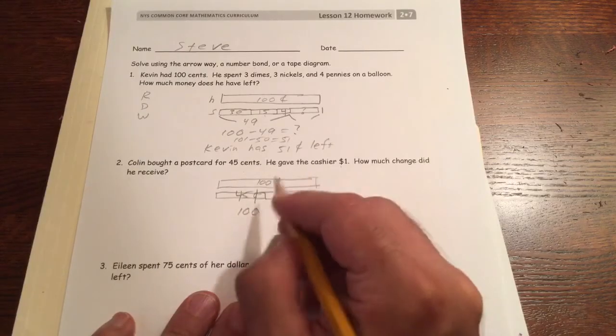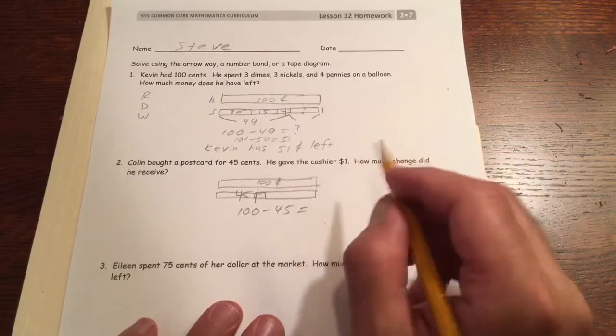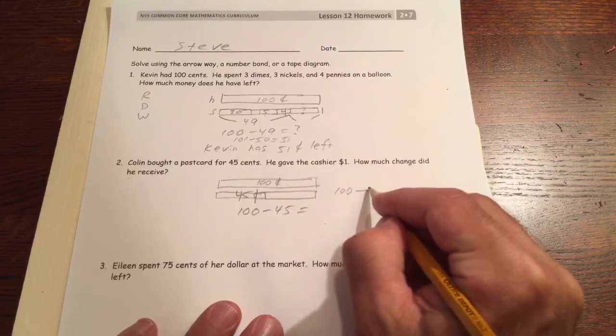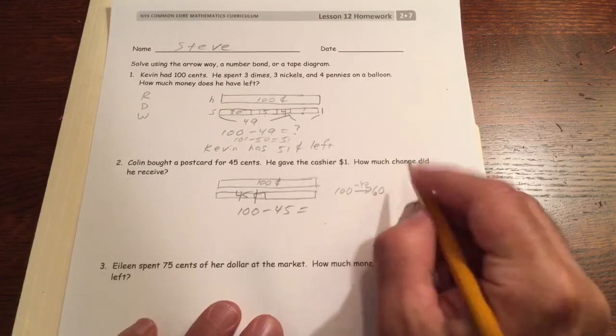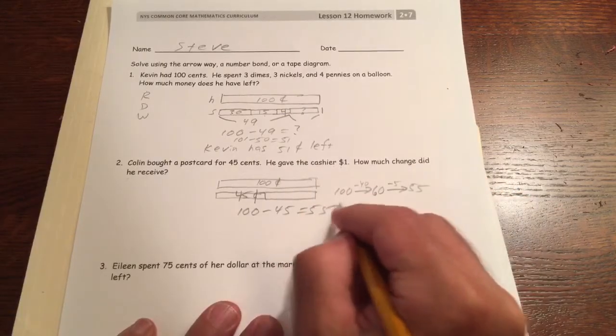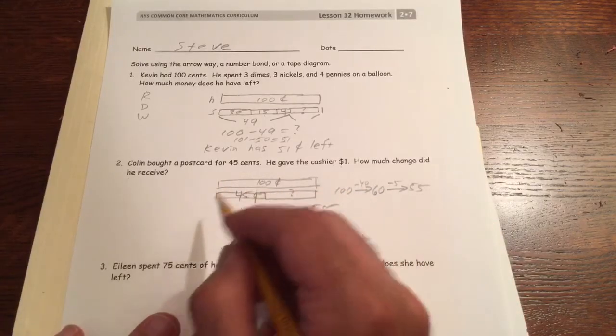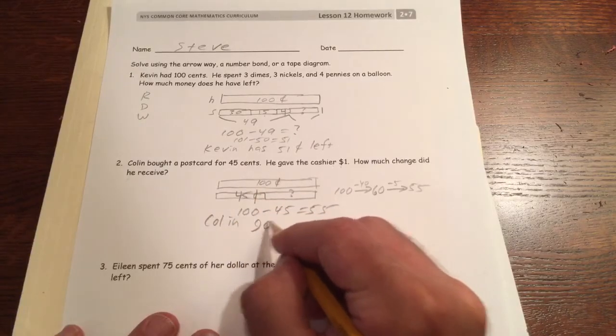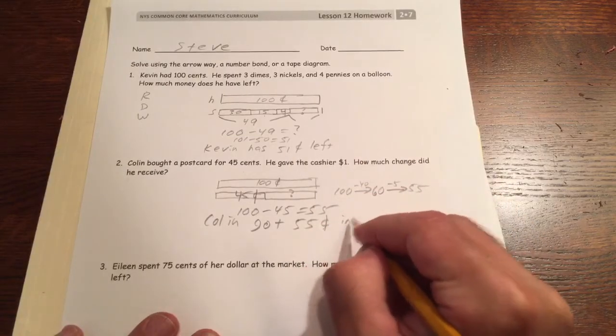That's just 100 minus 45. We could use the arrow way to solve that, can't do it in our heads. 100 minus 40 gets us to 60, then I'm going to subtract the 5. So Colin got 55 cents in change.